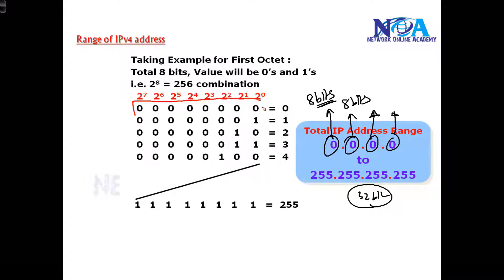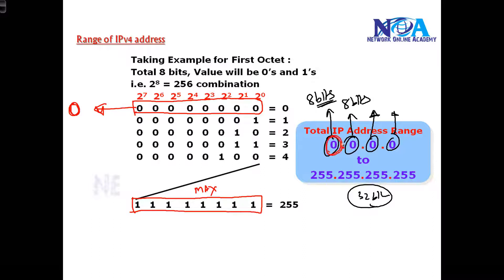In one portion, the minimum number I can write is all zeros — the least number — so the equivalent decimal value is zero. The maximum number I can write is all ones, because I cannot write more than eight bits in one portion. Adding 128 plus 64 plus 32 plus 16 plus 8 plus 4 plus 2 plus 1 gives 255.